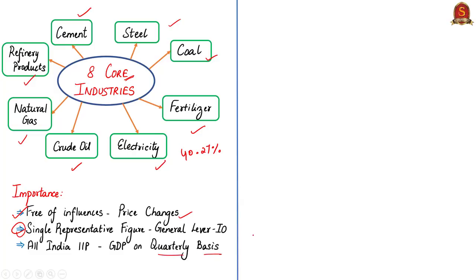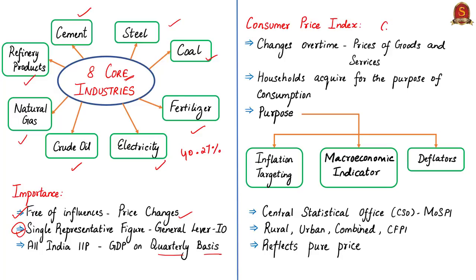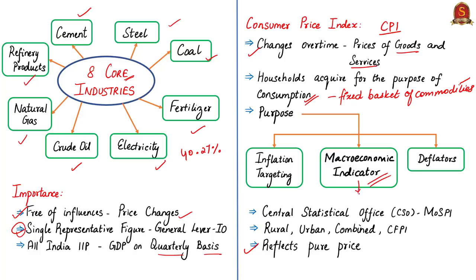IIP also influences GDP on a quarterly basis. Now let us move to CPI or Consumer Price Index. A Consumer Price Index is used to measure changes over time in the general level of retail prices of selected goods and services that households purchase for consumption. Such changes affect the real purchasing power of consumers' income and their welfare. The CPI measures price changes by comparing through time the cost of a fixed basket of commodities. The basket is based on the expenditure of a target population in a certain reference period. Since the basket contains commodities of unchanging or equivalent quantity and quality, the index reflects only pure price. CPIs have been widely used as a macroeconomic indicator of inflation or headline inflation, replacing the WPI.